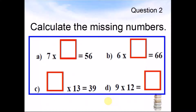Question 2. Calculate the missing numbers. A: 7 times something equals 56. B: 6 times something equals 66. C: something times 13 equals 39. D: 9 times 12 equals something. Pause the video until you can work out your answers.